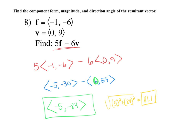Direction works exactly as before. Take the inverse tangent of 84 over 5 — both are negative so I'm in quadrant 3. The inverse tangent gives 86.6 degrees. In quadrant 3, add 180, so 180 plus 86.6 gives a direction of 266.6 degrees.